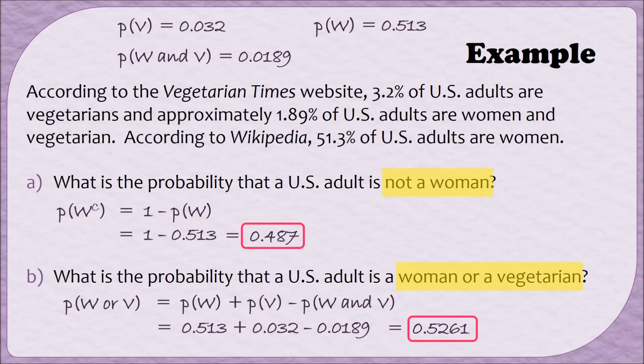A common mistake for a problem like Part B is leaving off minus the probability of W AND V. In other words, a common mistake for Part B is just to add two numbers together. In this case, it wouldn't happen, but it is possible that when you add two probabilities together, you end up with a number that is bigger than 1. If that should happen, a flag should go off, and you should know that you've done something wrong. So that check of making sure your answers in the correct range can help guide you as to whether or not you've used a correct formula. Let's do one more example of a compound probability.